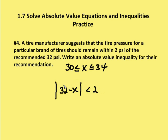So if I have a tire pressure of 35, 32 minus 35 is going to be negative 3. The absolute value of negative 3 is 3. 3 is not less than 2, so a PSI of 35 is not going to be acceptable — it's going to be outside of the suggested tire pressure for that particular brand of tire. I can also rewrite this as x minus 32 is less than 2. Either way would work.